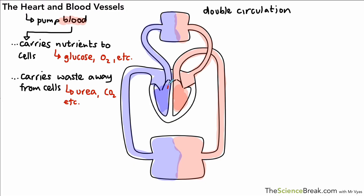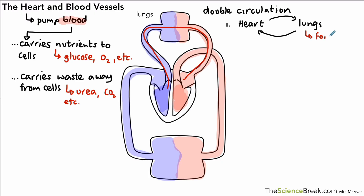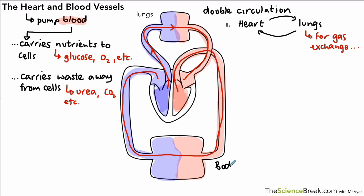In our double circulation there are two loops. The first loop goes from the heart to the lungs and back to the heart again — when blood goes to the lungs it drops off carbon dioxide picked up from cells in the body and picks up oxygen from fresh air breathed in. So in the lungs we get gas exchange. The second loop goes from the heart to the body, including the head, and back to the heart again.